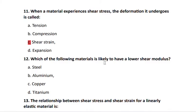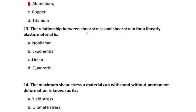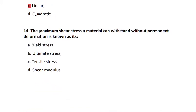Question 12: which material is likely to have a lower shear modulus? The answer is aluminium — steel has the highest and aluminium has a lower shear modulus. Question 13: the relationship between shear stress and shear strain for a linearly elastic material is linear and proportional, since shear stress is proportional to shear strain.